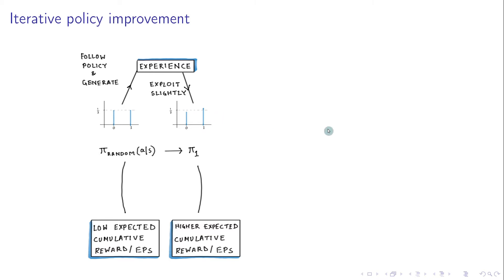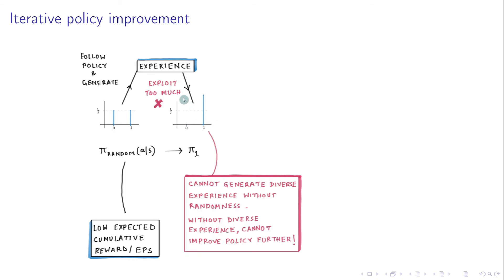We shouldn't exploit too aggressively like this, where the probability distribution changes drastically, because such a policy has very little randomness. And without randomness, we cannot generate diverse experience. And without diverse experience, we cannot improve the policy further.